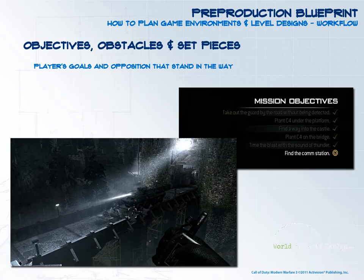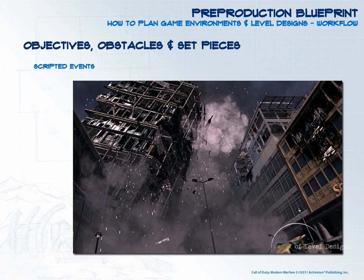The next part is to create objectives, set up obstacles, and create set pieces. Objectives are the player's goal and obstacles are opposition that stand in the player's way — a very common formula for single player games. Set pieces are scripted events for single player maps, multiplayer maps, or standalone game environments. They allow you to enrich the player experience within the game. Modern Warfare 3 and Half-Life 2 are perfect examples of various set pieces within a map that add to the player's experience.